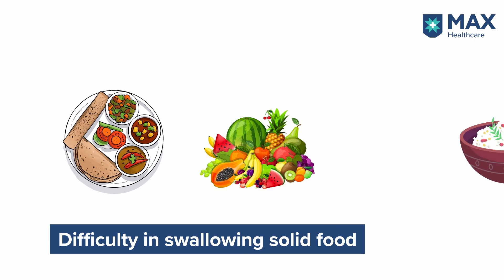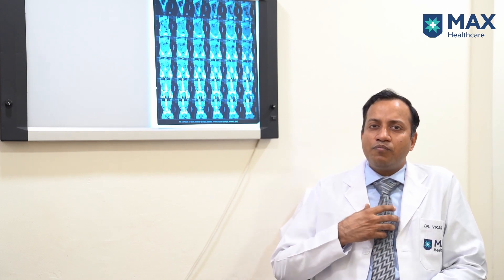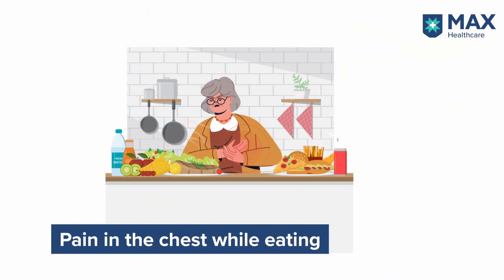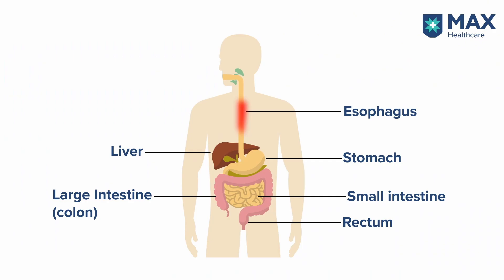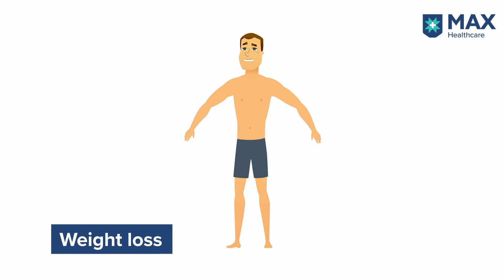Initially, this problem occurs with solid food such as chapati, fruits, or rice, and the patient drinks a lot of water during their meals. A few days later, they can experience trouble while drinking water as well. A few patients may experience chest pain as they eat their meals. If the patient suffers from chest pain, it can indicate that esophageal cancer is spreading to the organs around the food pipe. Esophageal cancer's third symptom is weight loss, as esophageal cancer patients eat less food.